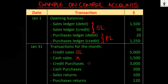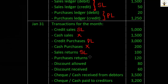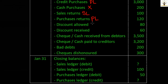Credit purchases are made from creditors, hence will be recorded in the purchase ledger control account. Cash purchases will also be ignored since they are recorded in the cash book and the general ledger. Sales returns are goods returned by debtors, so they go in the sales ledger control account. Purchase returns are goods returned to creditors, so they go in the purchase ledger control account.